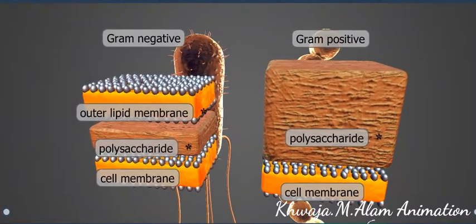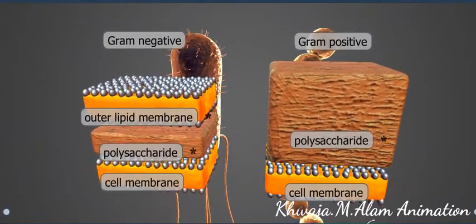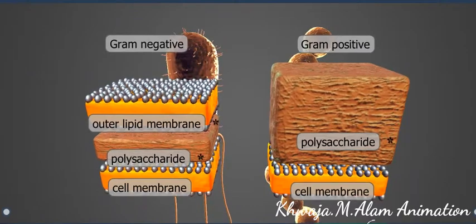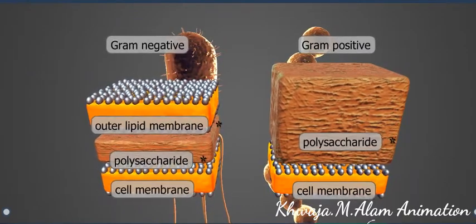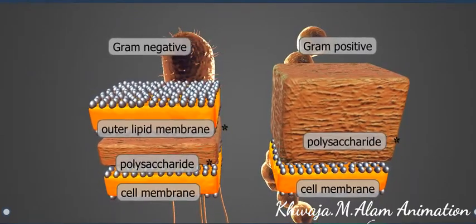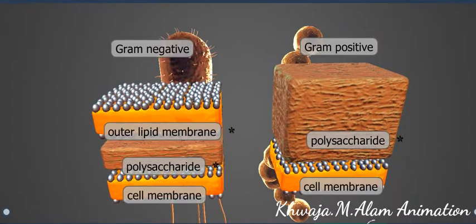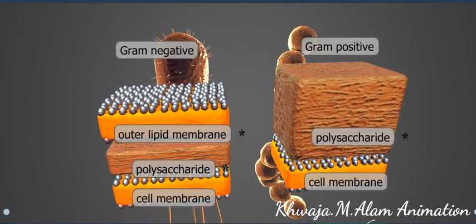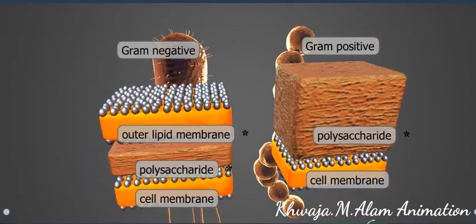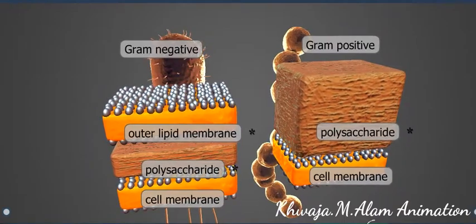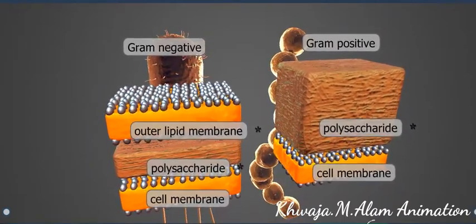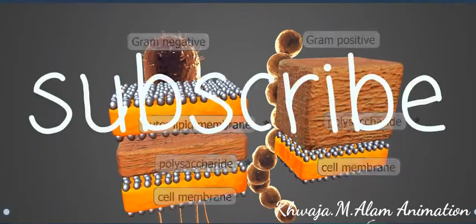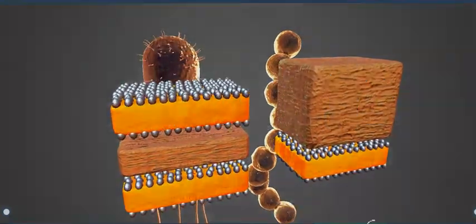Gram staining differentiates bacteria into gram-negative and gram-positive groups. The basis of differentiation is that staining produces different results in the cell walls of different types of bacteria because of their different structure. The two types of bacteria react to antibiotics differently, so treating different bacterial infections requires different antibiotics.